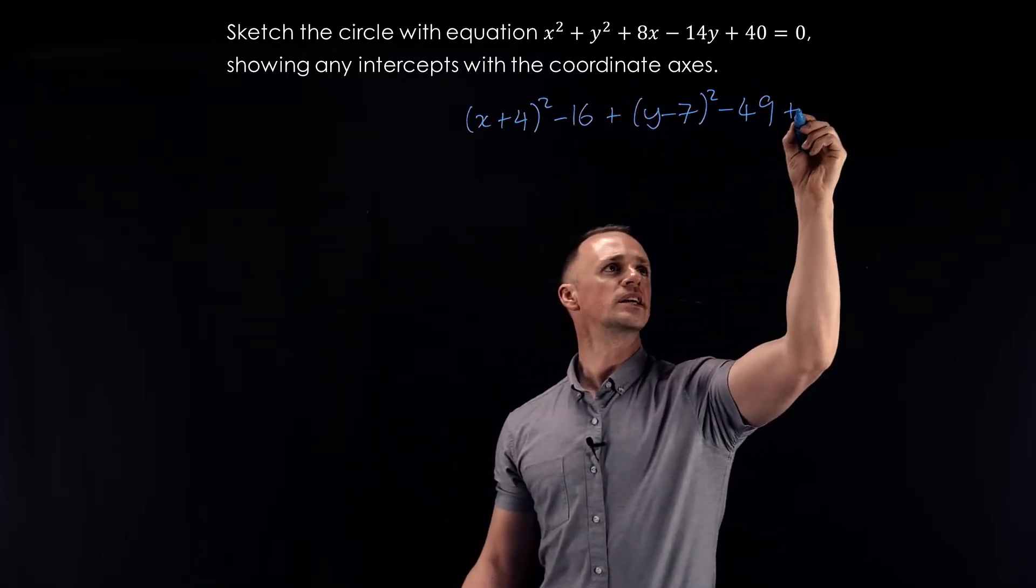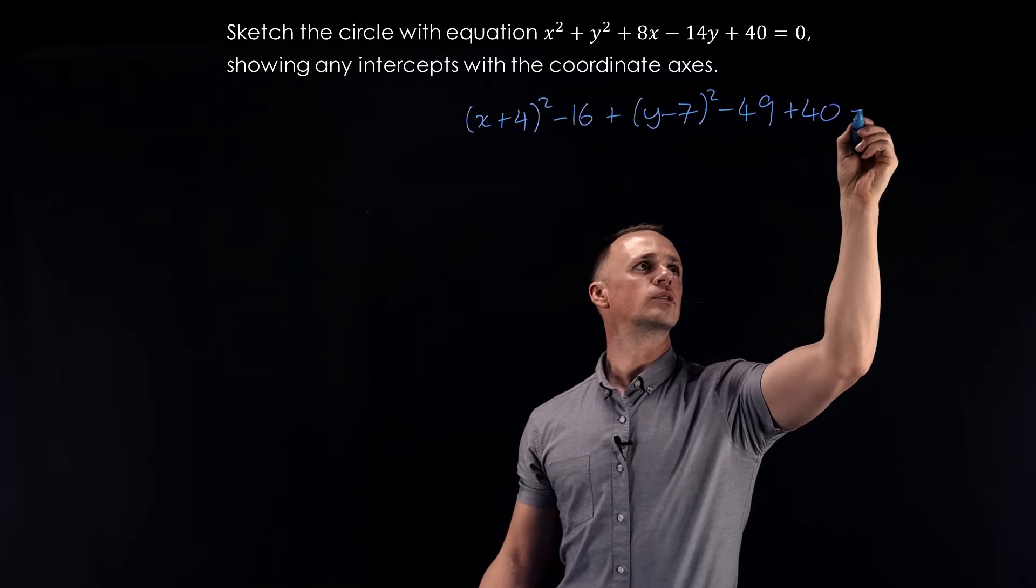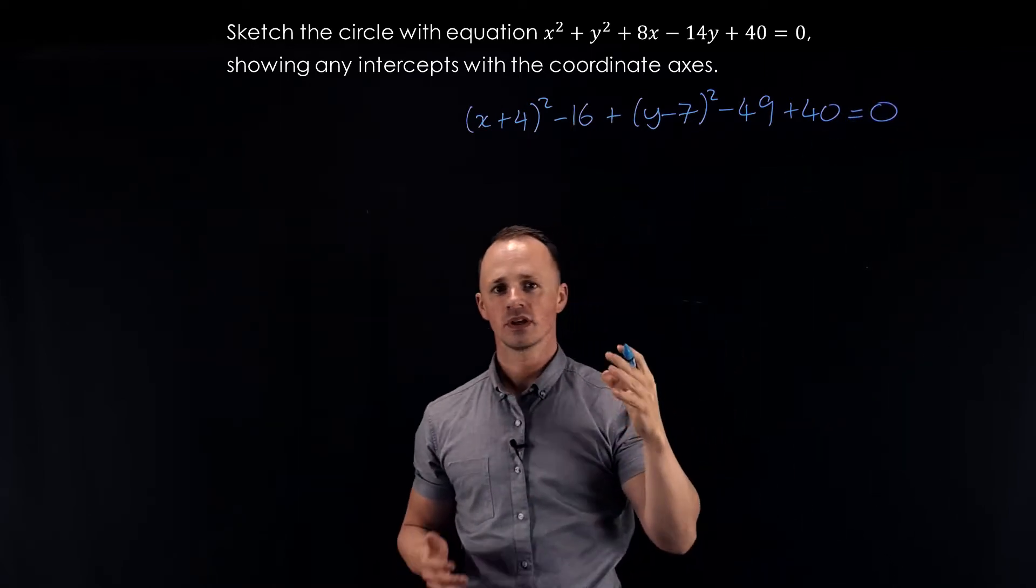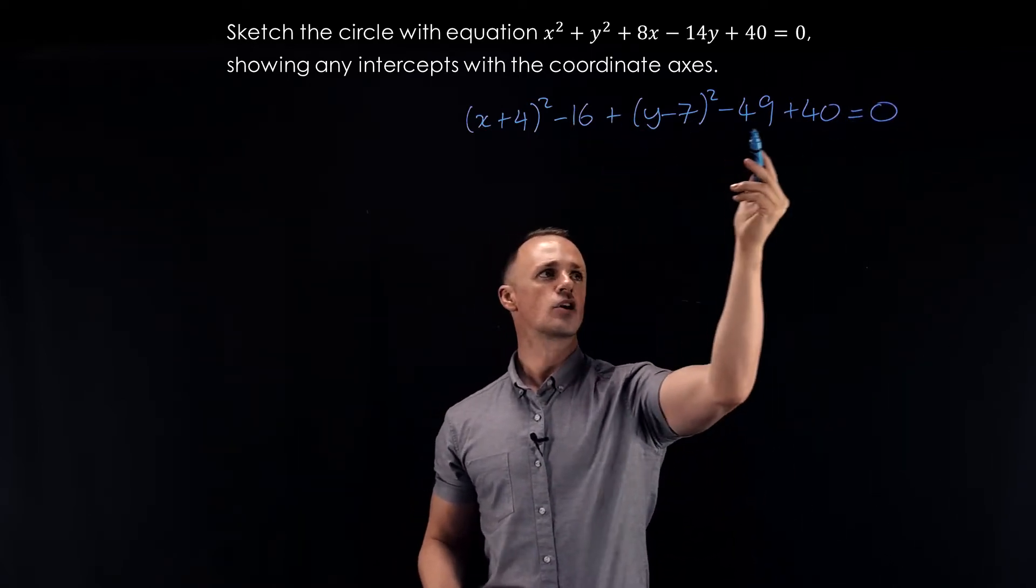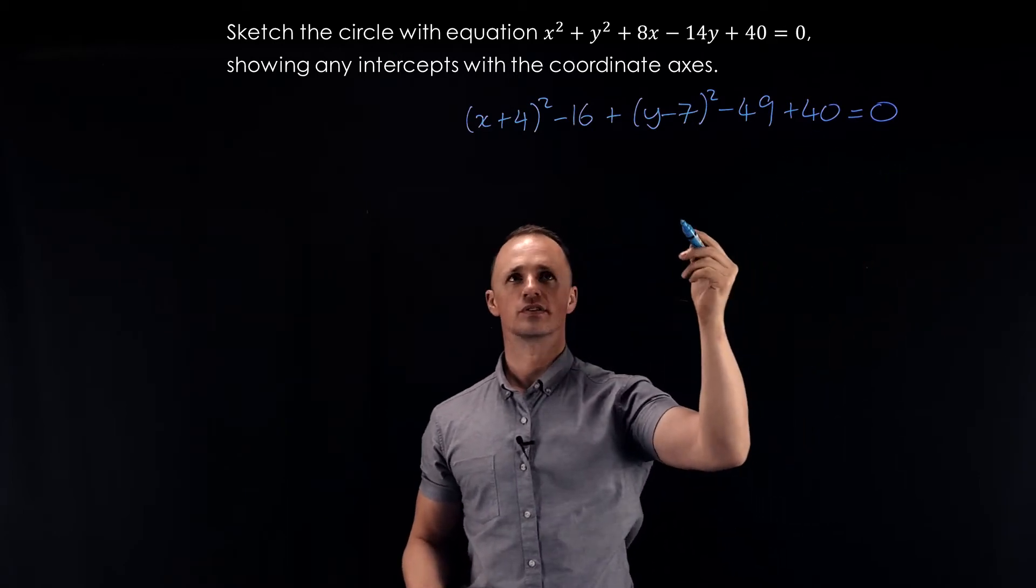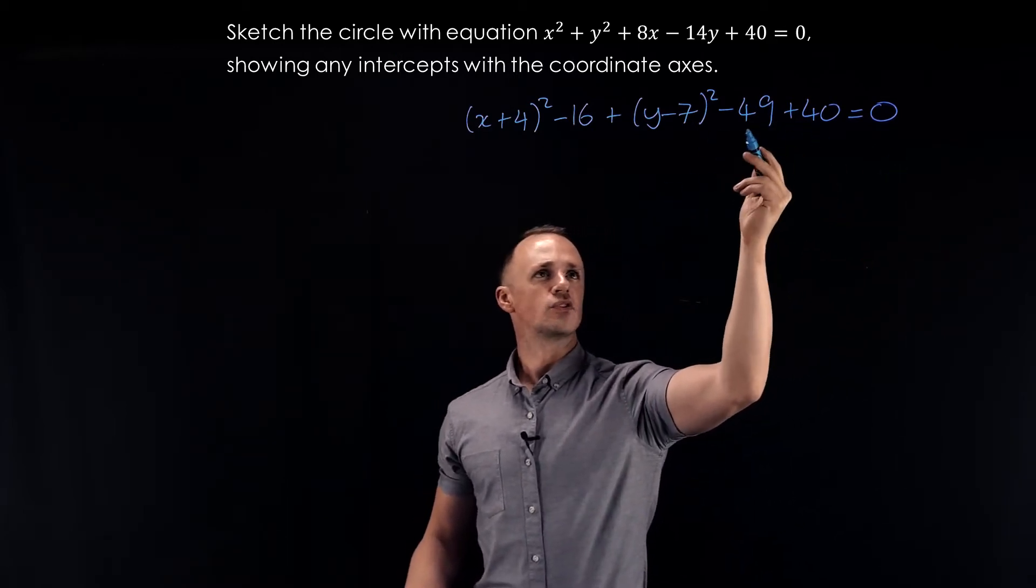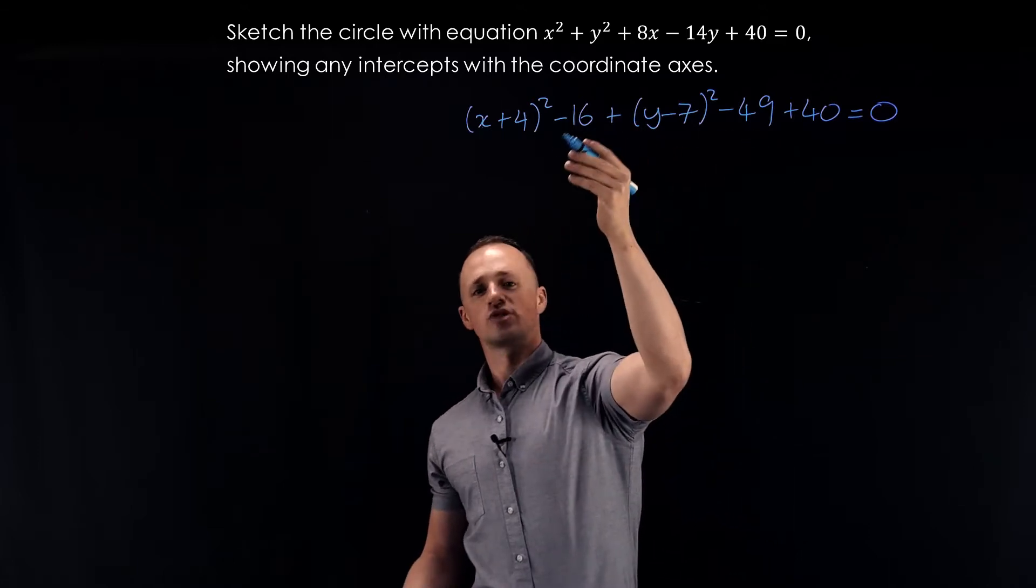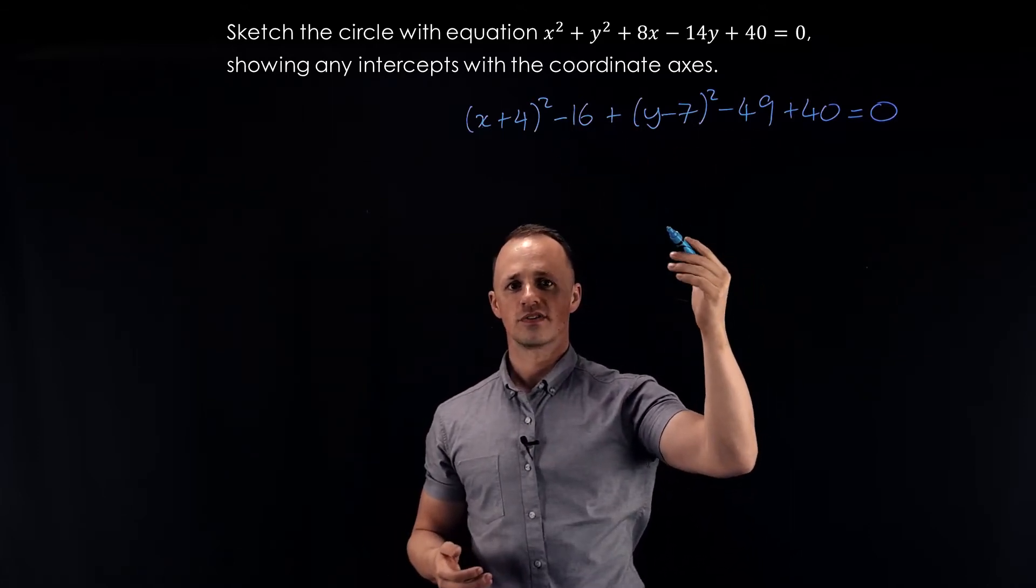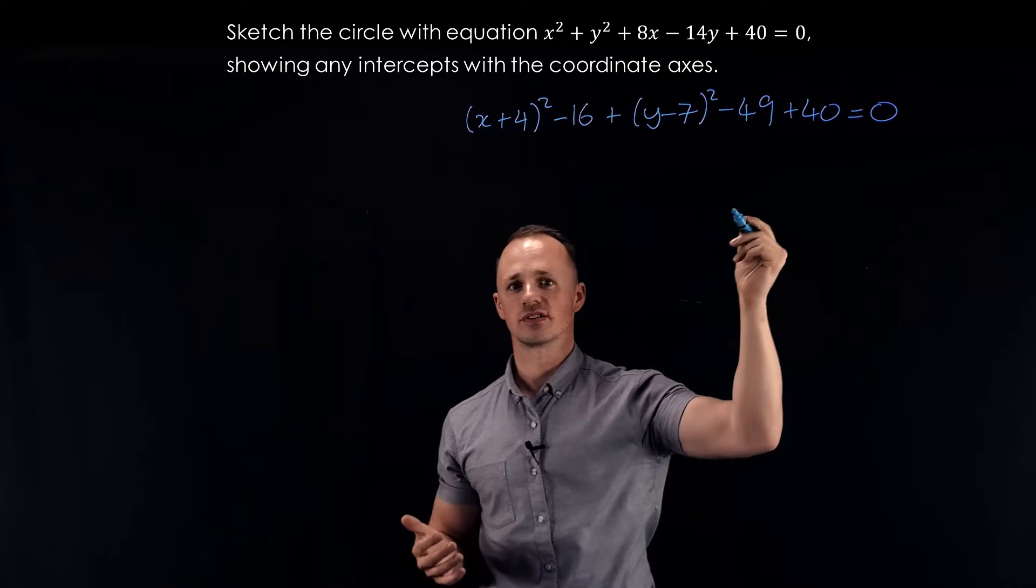I've got an extra plus 40 that I need, and that equals 0. Now that I've got that, I can collect the constants together and move them over to the other side. So if I've got 40 minus 49, that's minus 9. Subtract 16, that gives me minus 25. So when I move it over, it'll be positive 25.